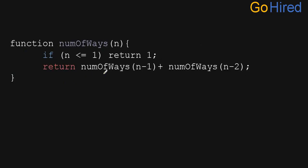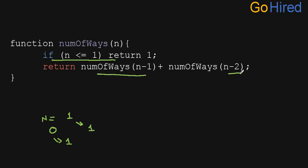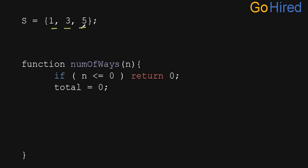Writing the recursive formula into code is straightforward. We write a function numberOfWays returning numberOfWays(n-1) + numberOfWays(n-2). The base case is when n equals 0 or 1, there is only one way, so we keep those as base cases. Now, instead of just 1 and 2, if 1, 2, and 3 are given we need to iterate over all of them and add those returned values.